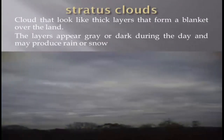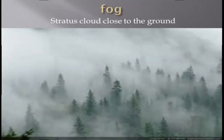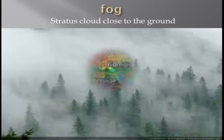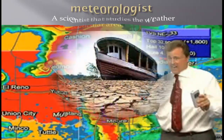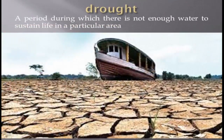Stratus clouds: clouds that look like thick layers that form a blanket over the land. The layers appear gray or dark during the day and may produce rain or snow. Fog: stratus cloud close to the ground. Meteorologist: a scientist that studies the weather. Drought: a period during which there is not enough water to sustain life in a particular area.